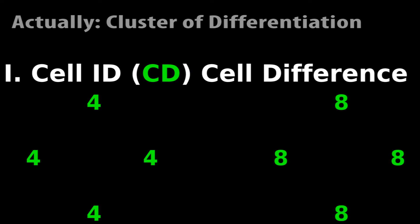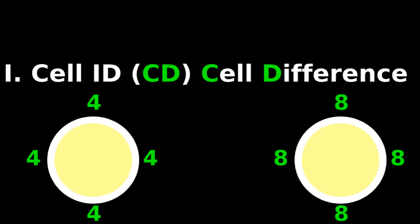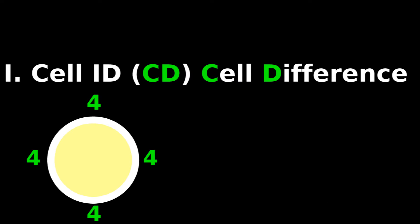These cell differences, or CDs, tell you what kind of cell it is. The cells with 4s on the surface are CD4 cells, suggesting they're helper T cells.